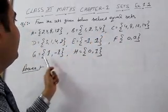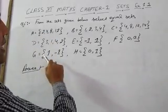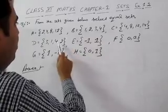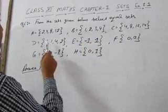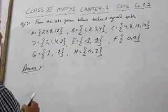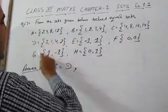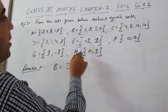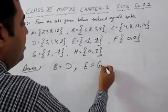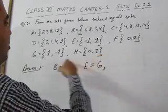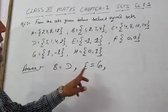Question number 6: from the sets given below, select equal sets. Set A = {2, 4, 8, 12} — no other set has these same elements. Set B = {1, 2, 3, 4} and set D = {1, 2, 3, 4}, so B is equal to D. Set C = {4, 8, 12, 14} — no other set matches. Set E = {-1, 1} and set G = {1, -1} have the same elements, so E is equal to G. Sets F and H do not match any other set. Therefore the equal sets are: B = D and E = G.